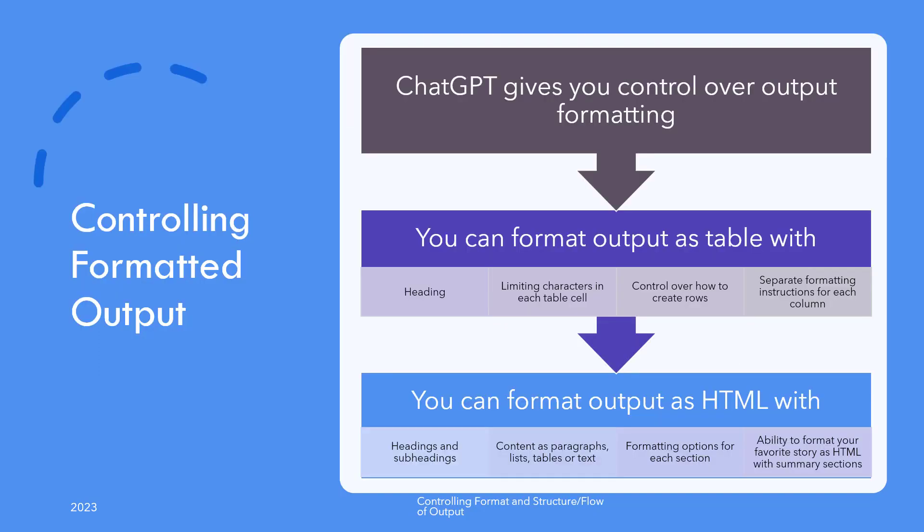You are in total control of the output that ChatGPT generates for you. For example, if you are generating a table, you can set the heading, limit the characters in each table cell, and provide separate formatting instructions for specific columns. Similarly, you can instruct it to format your HTML output with heading types and content formatting for each section. For instance, you can instruct it to come up with a short form of your favorite book in HTML format with an H2 heading for each chapter and then a 200-word summary for each chapter.